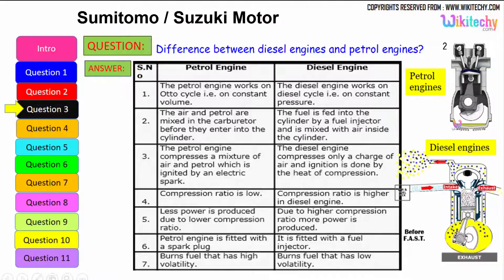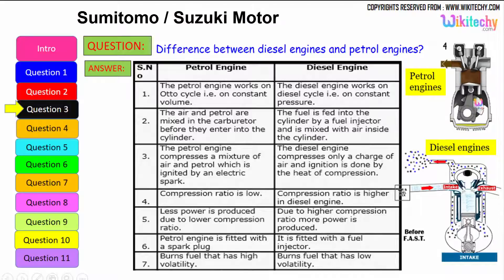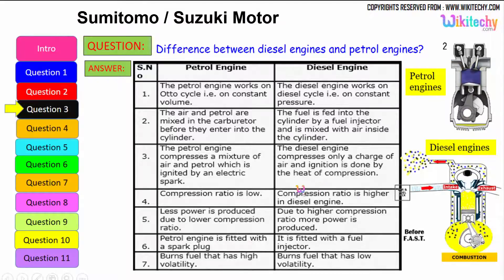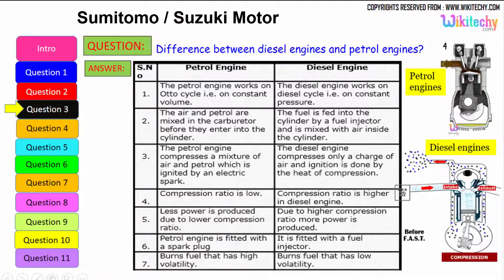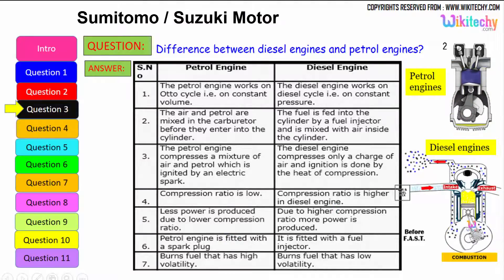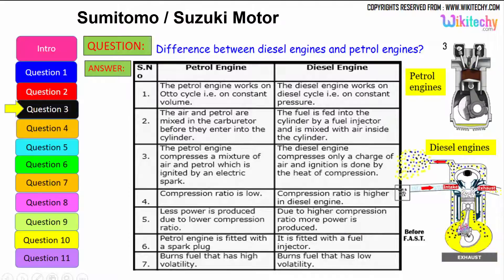The compression ratio is low in a petrol engine whereas it is higher in a diesel engine. Less power is produced due to the lower compression ratio in a petrol engine, while a higher compression ratio in a diesel engine produces more power.